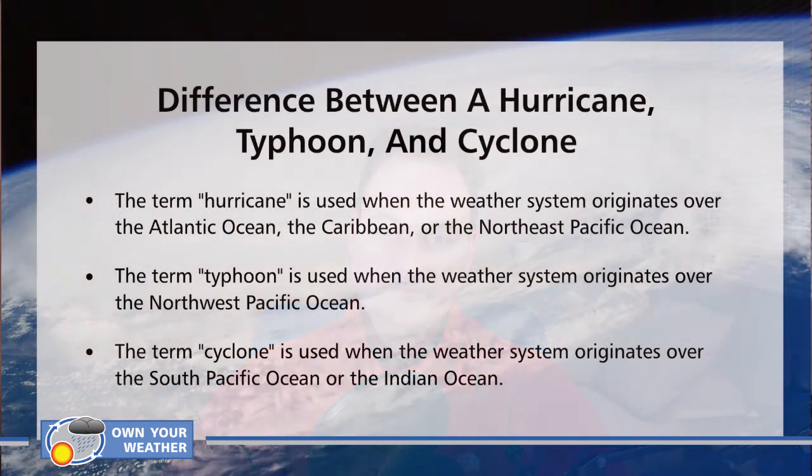Now that we know what a tropical cyclone is and that it basically describes each of these three weather phenomena, the question remains: what is the difference between the three? A hurricane, typhoon, and cyclone are all defined according to location — where around the world they occur. The term 'hurricane' is used when the weather system originates over the Atlantic Ocean, the Caribbean, or the northeast Pacific Ocean. The term 'typhoon' is used when the system originates over the northwest Pacific Ocean. When the system originates over the south Pacific Ocean or the Indian Ocean, it is referred to as a 'cyclone.'